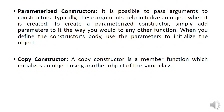The parameterized constructor allows passing arguments to the constructor to initialize an object when it is created. To create a parameterized constructor, add parameters to the constructor function like any other function, then use the parameters to initialize the object in the constructor body. A copy constructor is a member function that initializes an object using another object of the same class.